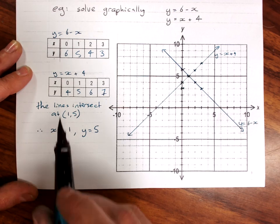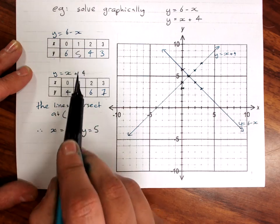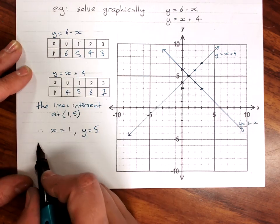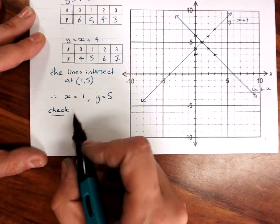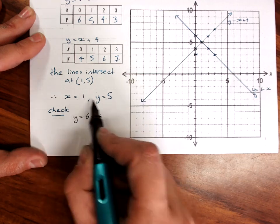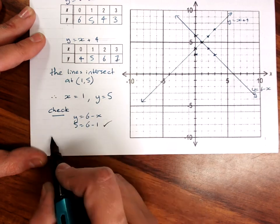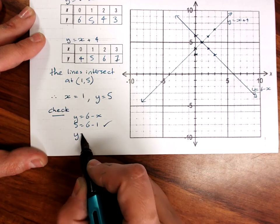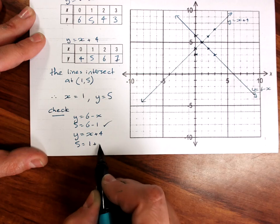It is a very good idea if the solution hasn't turned up obviously in your table of values to check by substituting. And all that check is, is y equals 6 minus x and substitute those in. 5 equals 6 minus 1. Yes. Check the other one. y equals x plus 4. 5 equals 1 plus 4. Yes.